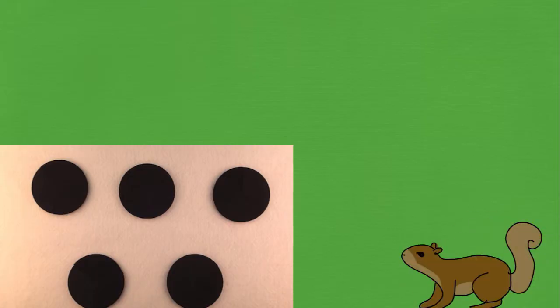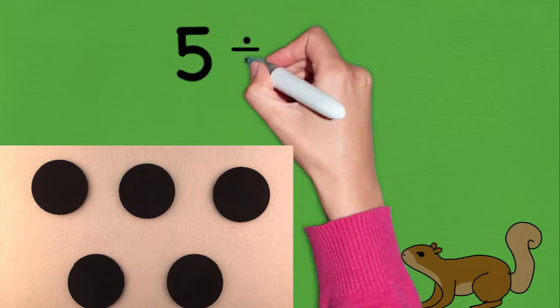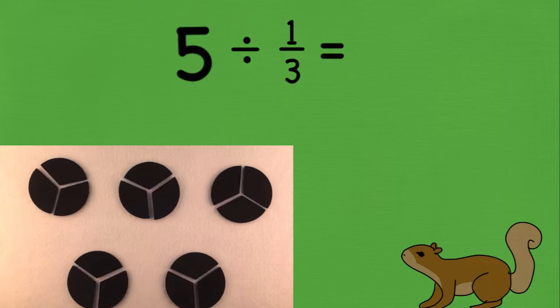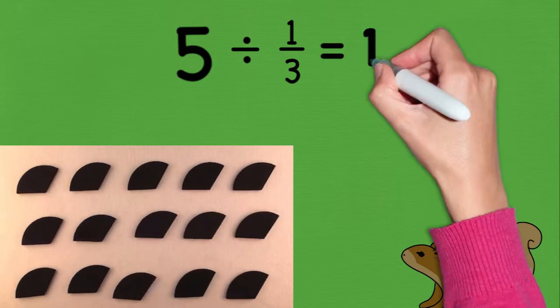So what would it look like if I had the problem 5 divided by a third? How many groups of 1 third can I make? First, I need to divide all the circles into thirds and put 1 third into each pile, giving me 15 piles.